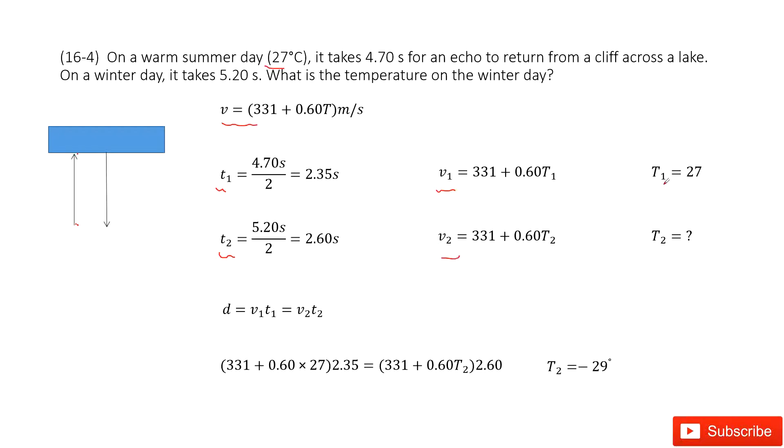So T1 is given, 27 degrees Celsius. And then T2, we need to find it. So this is unknown.